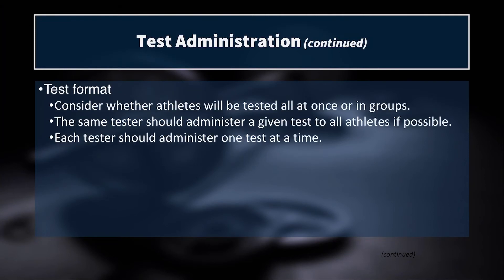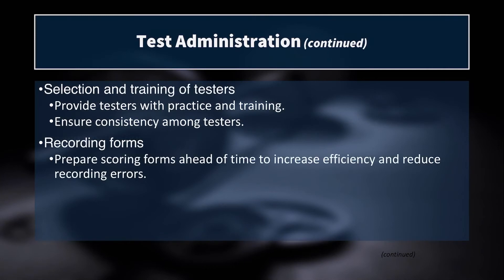We also want to have appropriate recording forms to increase efficiency and reduce recording errors. Make sure forms include the team roster, the order of athletes, and even the athlete's previous best in each test — so you can say, 'Last time you ran a 5.5 for your 40, let's get under that,' or 'Last time you jumped 42 centimeters, let's jump higher.' This helps encourage athletes, gives them a frame of reference, and keeps testing on track when athletes are listed in the order they'll be tested.